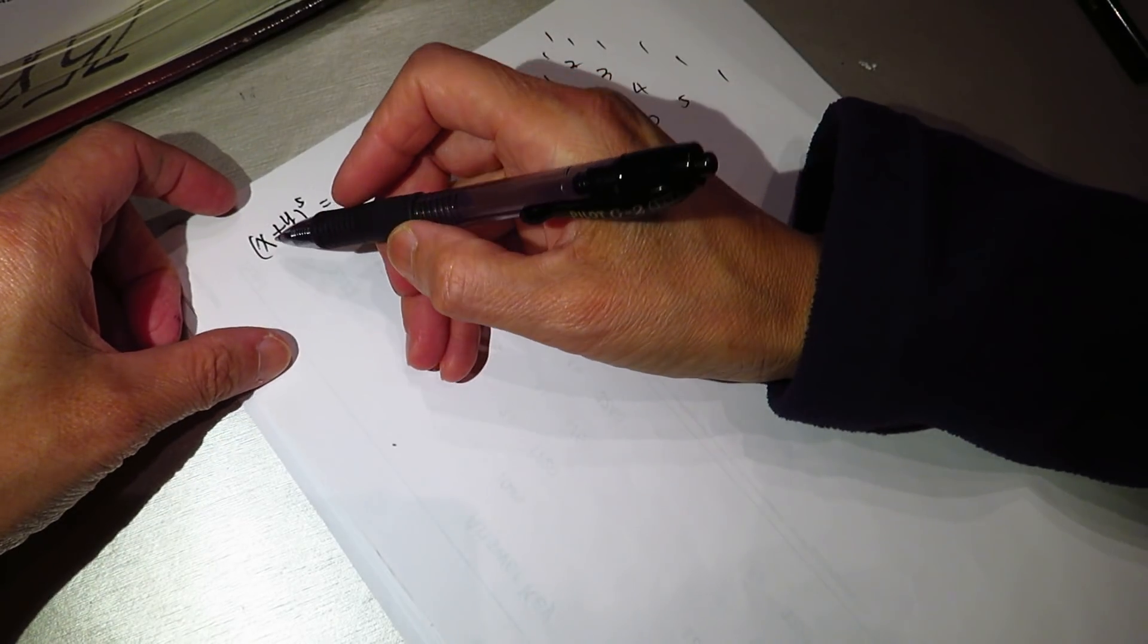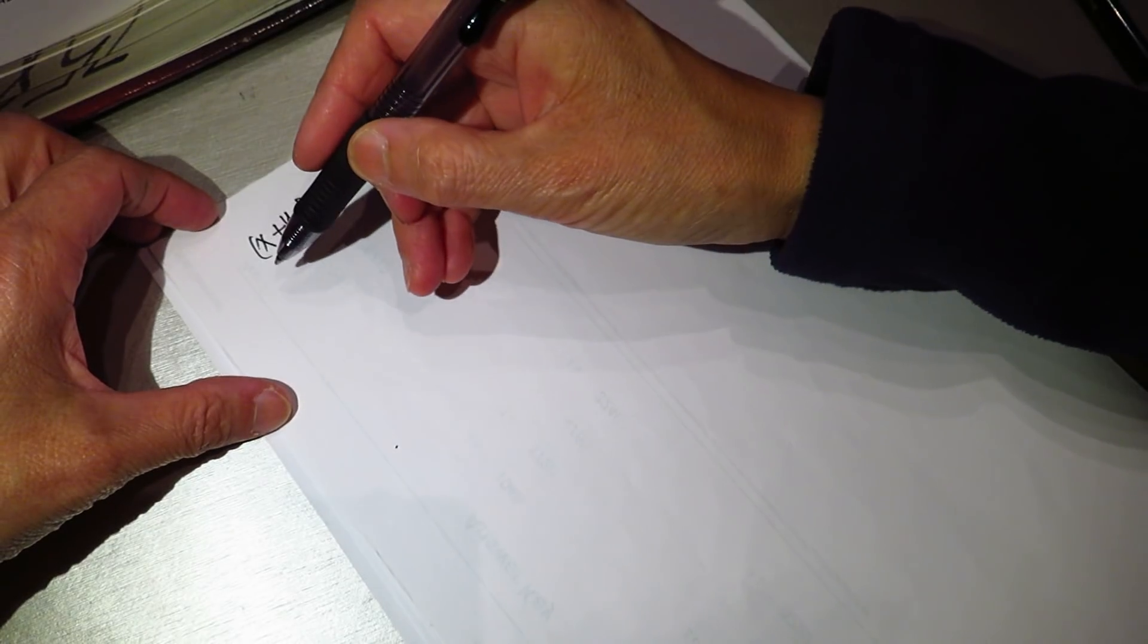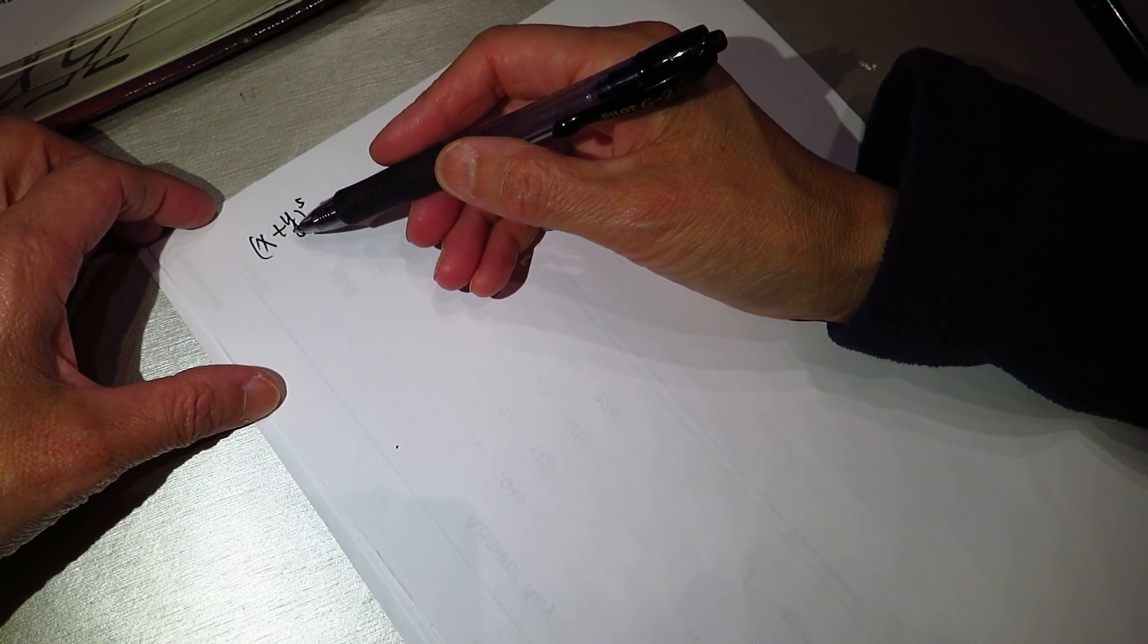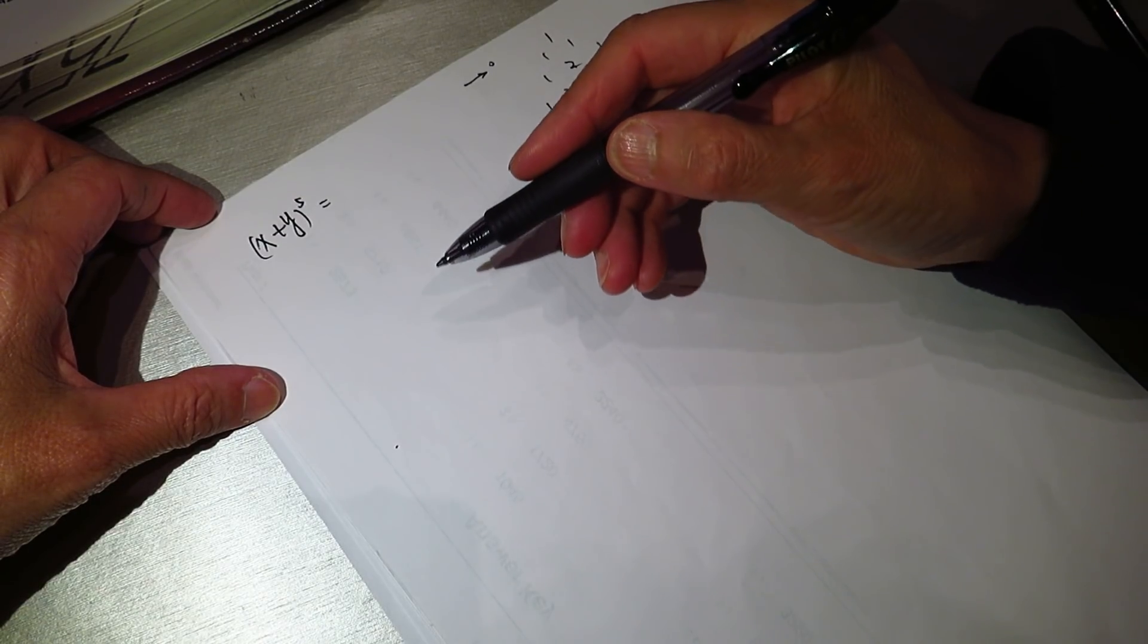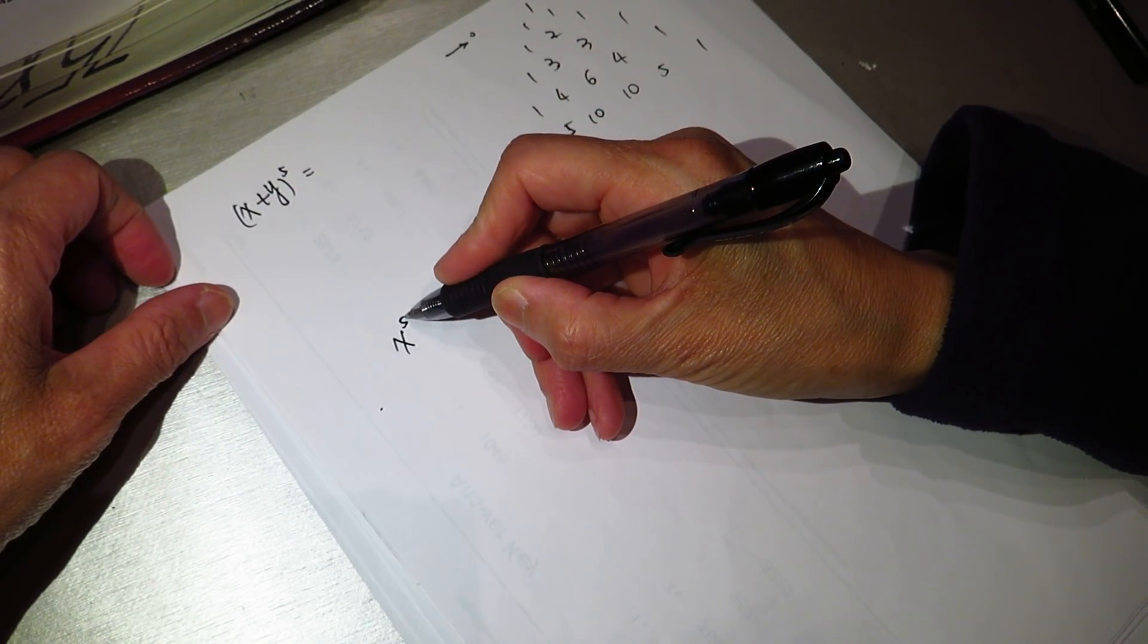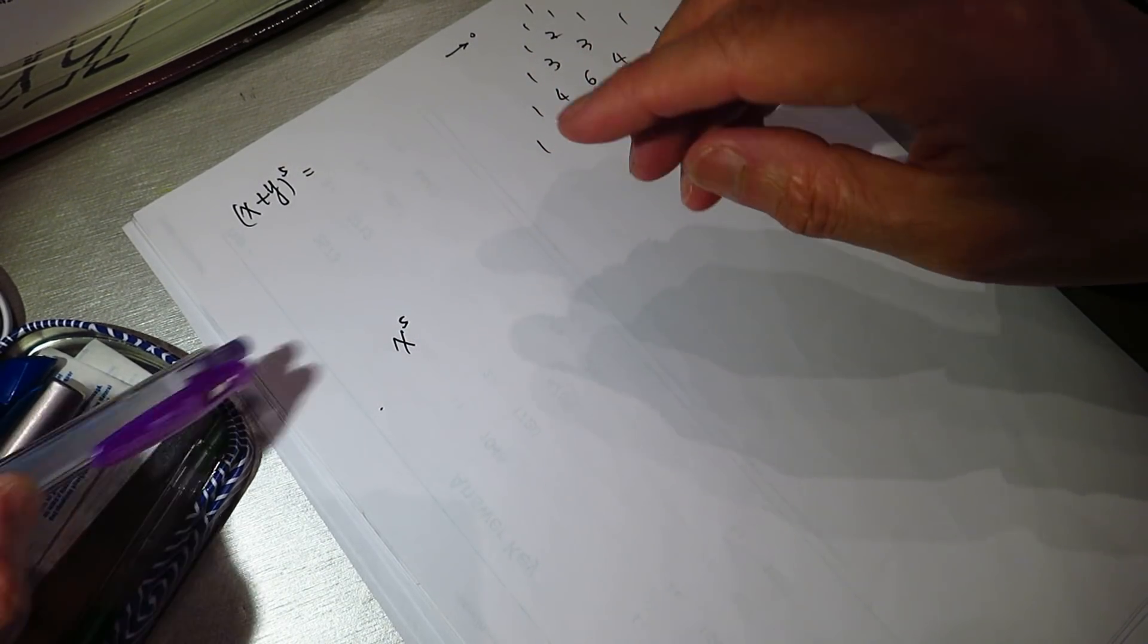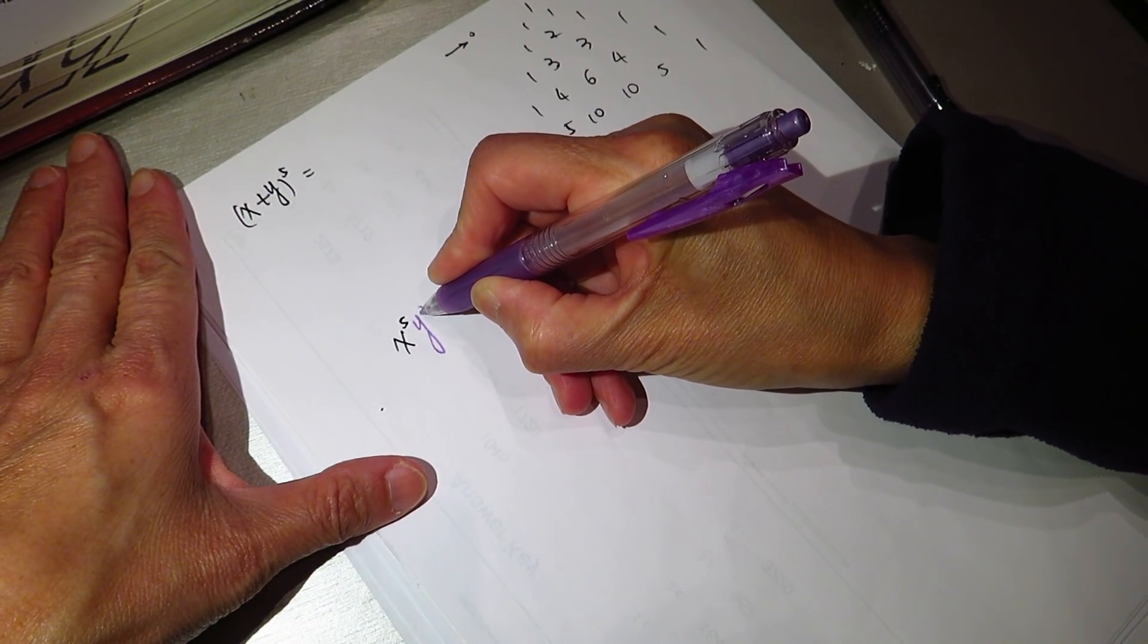The power is, the power for the X is from the highest to the lowest decreasing. And the power of Y, the second term, is from zero to increase to the highest. So, the first term is X to the power of five, and Y to the power of zero, which is one. We do not need to write it, but in any case, why not I write it? I want to make it clear. Y to the power of zero.